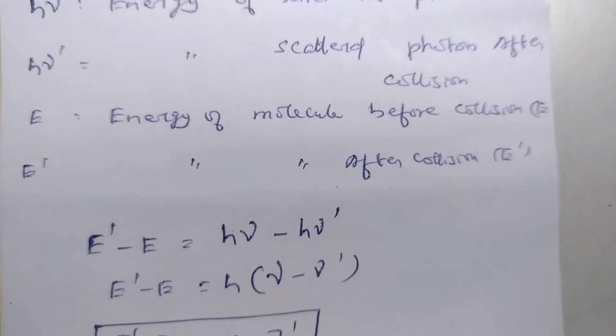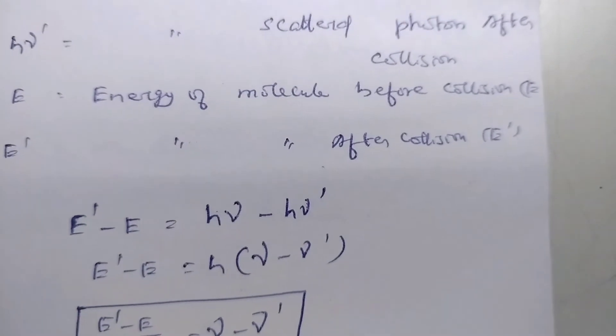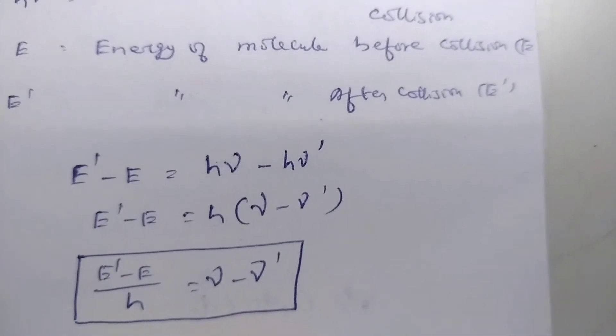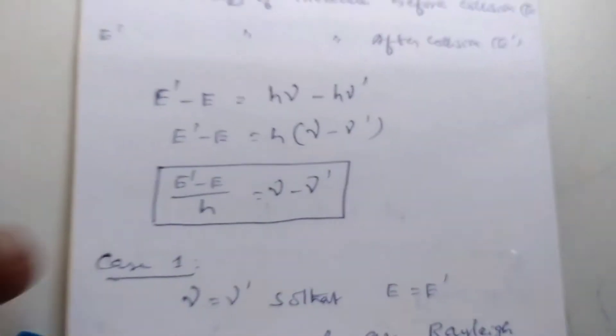E is energy of molecule before collision and E prime is energy of molecule after collision. Therefore, E prime minus E by H equals nu minus nu prime.